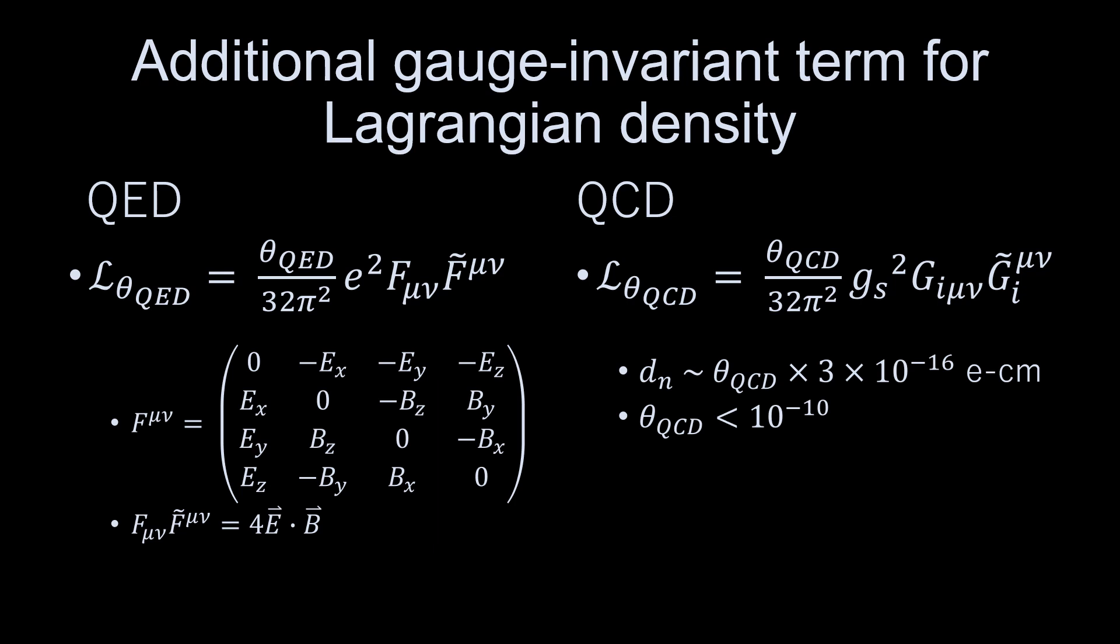This implies theta-QCD is less than 10 to the minus 10th. The need for such a small value of a dimensionless theta-QCD is the strong CP problem.